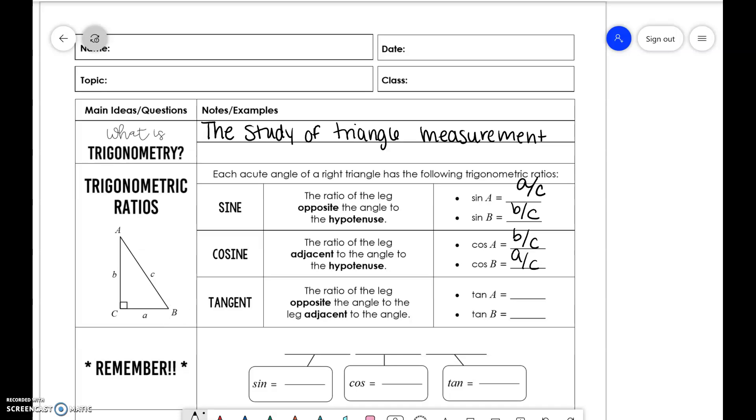And then lastly, we have tangent, which is a ratio of the opposite leg and the adjacent leg to an angle. So if we did tangent of A, it would be opposite, which is A, over adjacent, which is B. And if we did B, we would be B over A.